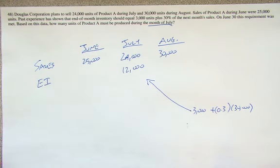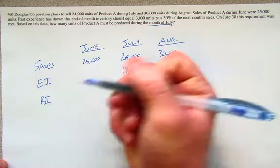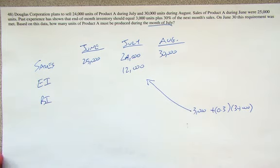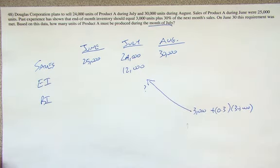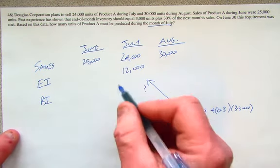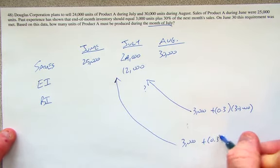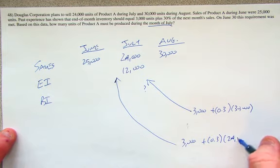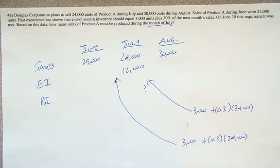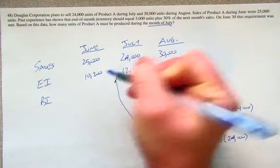The beginning inventory is another component of this, and we don't know what the beginning inventory for July is, but we have enough information to figure out what it would be. The ending inventory for June would have been 3,000 items plus 30% of predicted sales for July using the same methodology, the same parameters. 0.3 times 24,000 is 7,200, and add to that 3,000. So we would say the ending inventory at the end of June is 10,200.